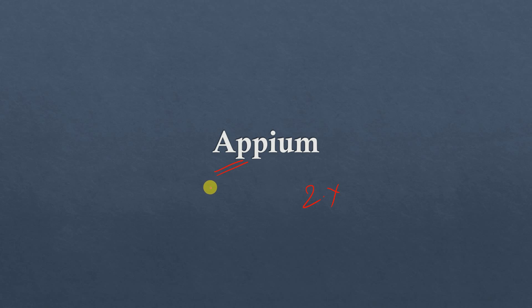Technically, Appium is a completely cross-platform testing tool. You can test any native application on Android, iOS, or even a web platform and Windows desktop platform. Appium supports multiple programming languages — whatever language Selenium supports, like Java, Python, C#, Ruby, Perl, PHP — everything is supported. In fact, in Appium you can write the script only once and run it on any platform, just like Selenium. Appium supports iOS, Android, and Windows platforms.